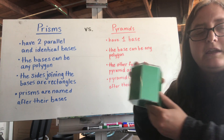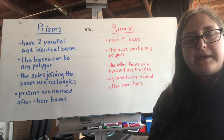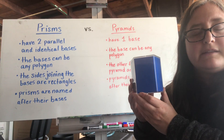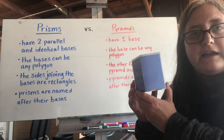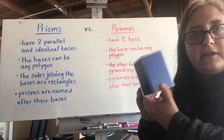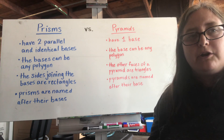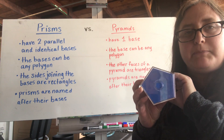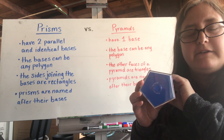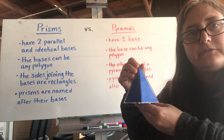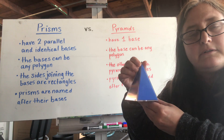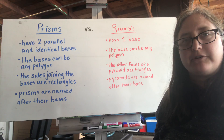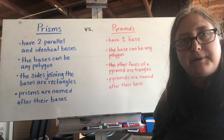So if I hear 'pentagonal prism,' I know the bases are pentagons — two bases since it's a prism — and since a pentagon has five sides, there are five rectangles in the middle. If I hear 'pentagonal pyramid,' I know there's a pentagon base, just one, and pentagons have five sides, so five triangles. Hopefully this gives you some ideas of the differences between prisms and pyramids.